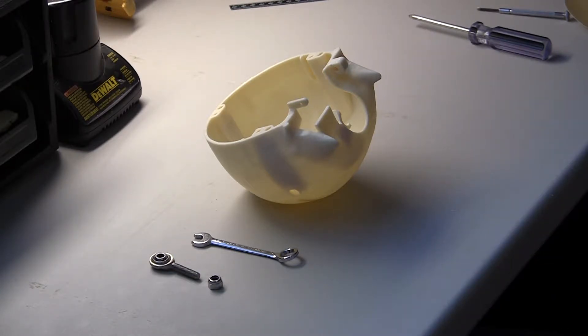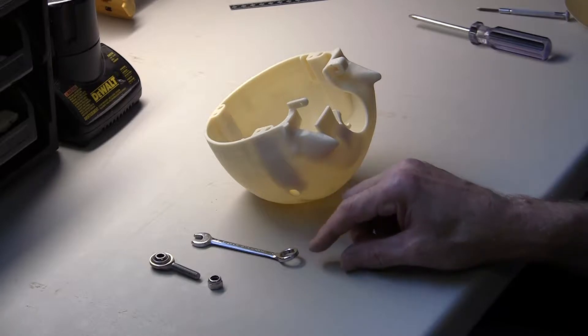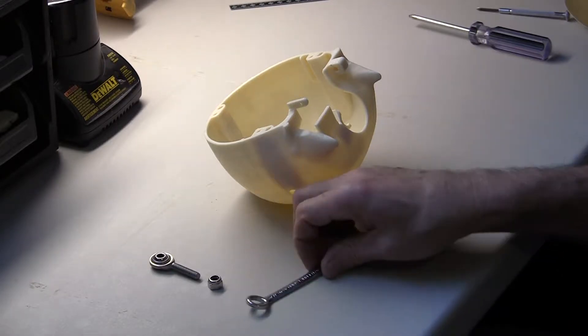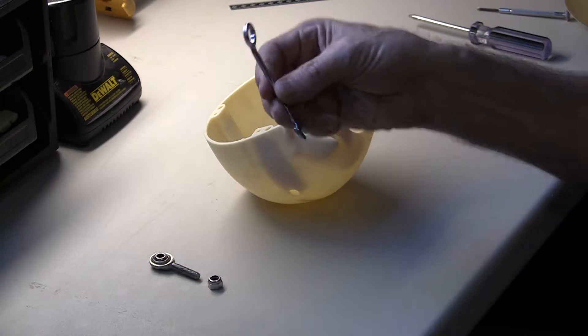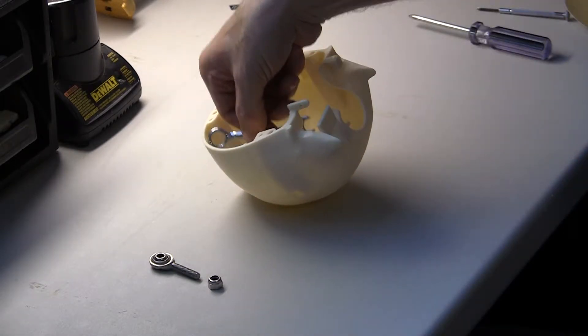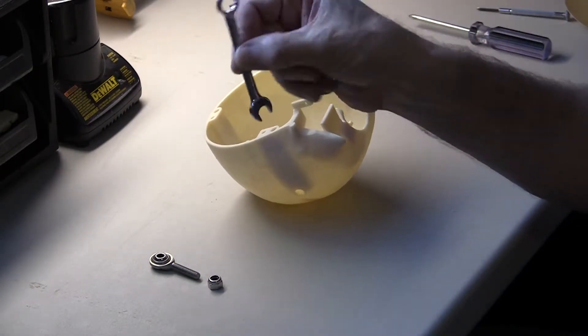And you're going to need your 7/16 wrench, and here is the stubby version of the 7/16 wrench. It has to be able to fit inside the skull, which is why I require the stubby version.